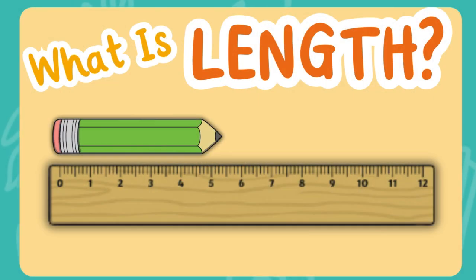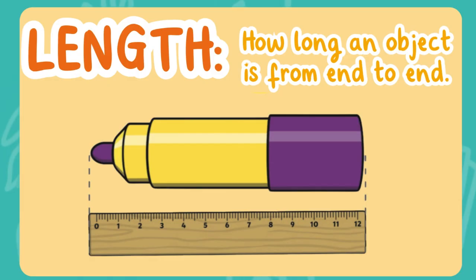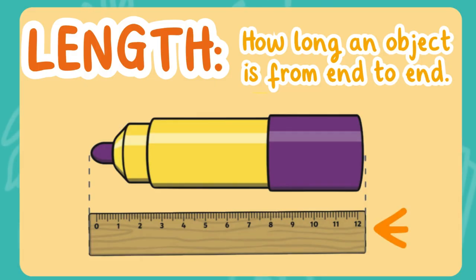What is length? Today we are going to be talking all about length and how to compare the length of two different objects. Length is how long an object is from end to end. Let's look at this marker down below. We can see from end to end that this marker is 12 inches — the length of this marker is 12 inches. We get an accurate length when we line up the marker to the beginning of the ruler and to the end of the ruler.